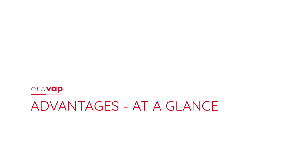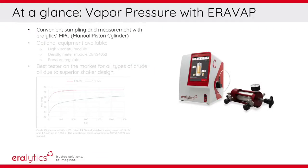AeroVap's advantages at a glance. Convenient sampling and measurement procedure with AeroLytics manual piston cylinder MPC. Optional equipment is available, such as the high viscosity module, the density module DENS4052, or a pressure regulator for high pressurized FPCs.